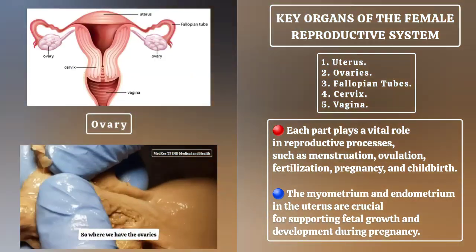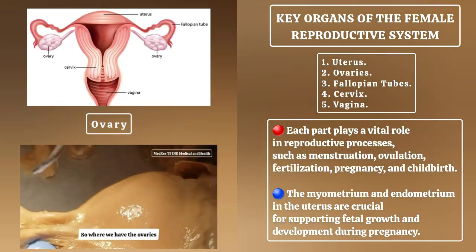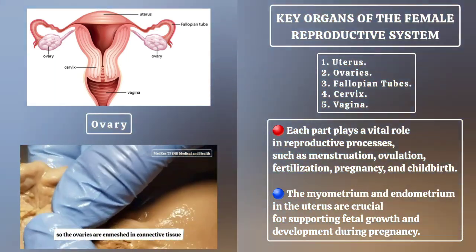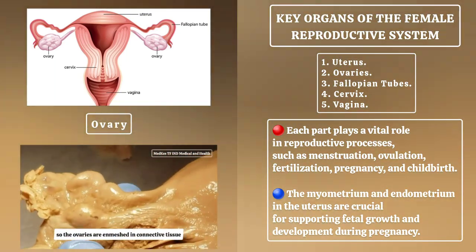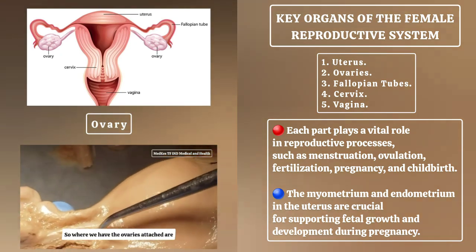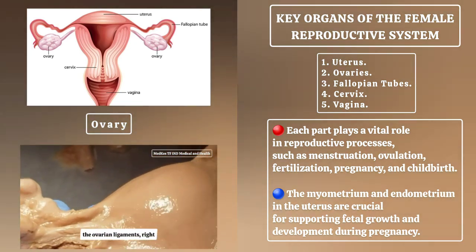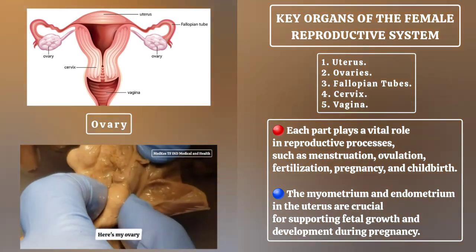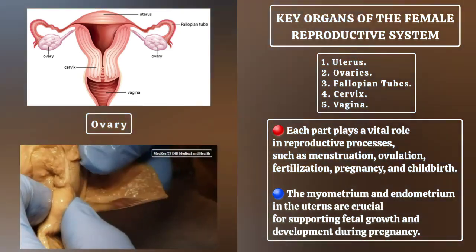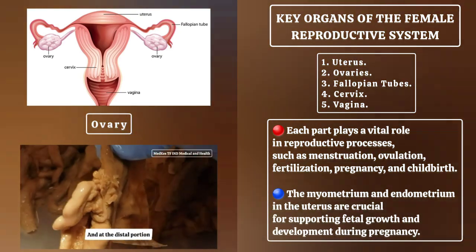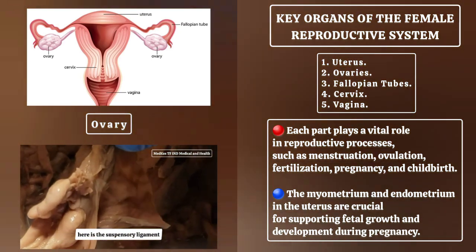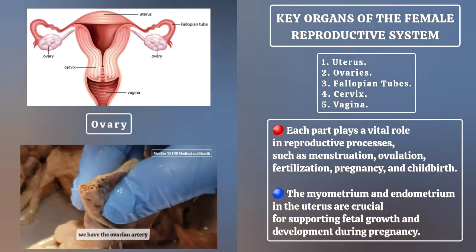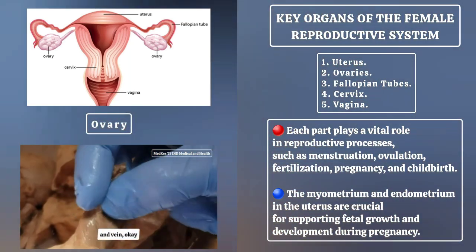The ovaries are enmeshed in connective tissue. Where we have the ovaries attached are the ovarian ligaments. We can see an ovarian ligament right here. Here's the ovary. And at the distal portion, here is the suspensory ligament. Within the suspensory ligament, we have the ovarian artery and vein.